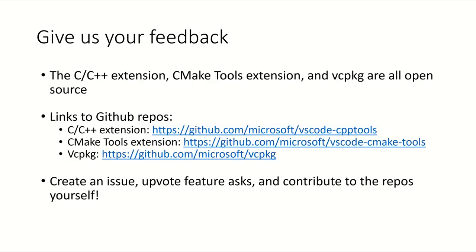Please give us your feedback. The C++ extension, the CMake Tools extension, and vcpkg are all open source, which means you can find all their repos on GitHub. We turn to our GitHub repositories frequently when creating roadmaps for new features — we check the open issues pages and see which issues have the most upvotes, which tells us what customers care most about. If you have a bug or issue, check the issues page and create one if you don't already see it. Upvote feature requests you care about so we know what to prioritize. And feel free to contribute to the repositories yourself — we're always looking for contributors. Thank you for coming to my session, and I'm excited to answer your questions in the live Q&A.